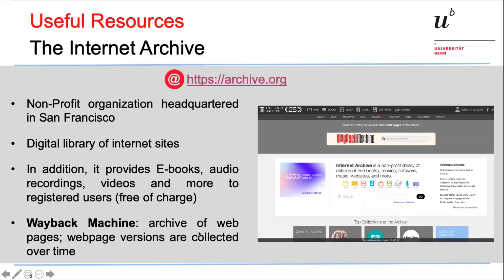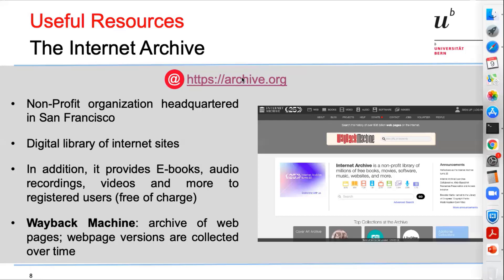For the practical part, let's look at some archiving resources. The best known internet archive site is simply called the Internet Archive — a nonprofit organization headquartered in San Francisco. Its main function is to be a digital library of internet sites, but it also provides ebooks, audio recordings, videos, and more. You only have to register as a user, but it's free of charge. The main service used to access all the archived web pages is called the Wayback Machine, where web page versions are collected over time.